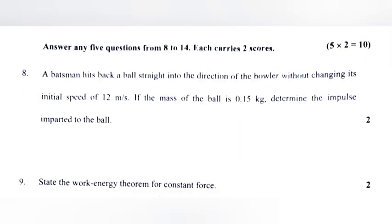Question 8: A batsman hits back a ball straight into the direction of the bowler without changing its initial speed of 12 meters per second. If the mass of the ball is 0.15 kilogram, determine the impulse imparted to the ball.